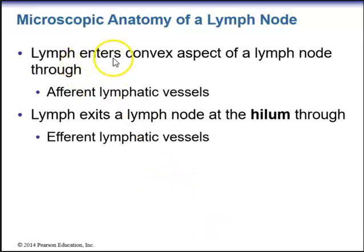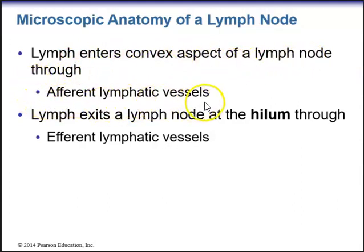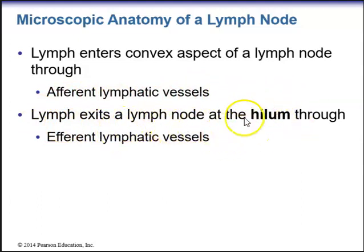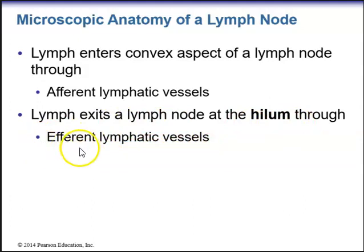Lymph will enter the convex aspect of a lymph node through afferent lymphatic vessels. Afferent lymphatic vessels bring lymph towards the lymph node. Lymph will then exit the lymph node at the structure called the hilum through efferent lymphatic vessels.